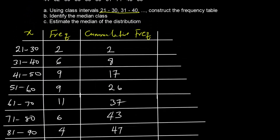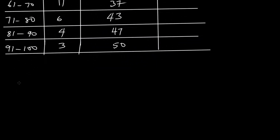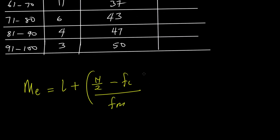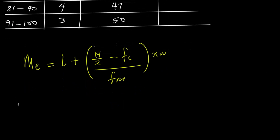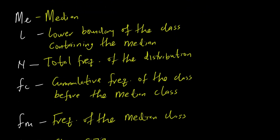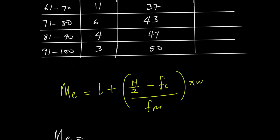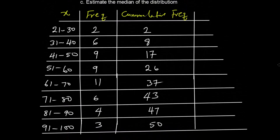Now I have the frequency and cumulative frequency table ready. I'll use this to estimate the median with the interpolation formula: Me equals L plus N over 2 minus F sub C, over F sub M, multiplied by W. To apply this, the first thing we need is to find the median class — the class that falls in the middle. We look at the frequency and try to identify the group that falls in the middle.